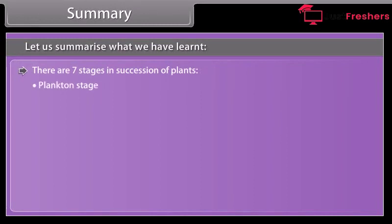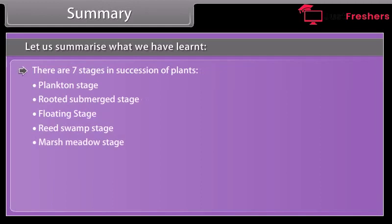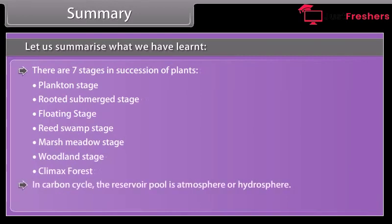There are seven stages in succession of plants: plankton stage, rooted submerged stage, floating stage, reed swamp stage, marsh meadow stage, woodland stage, and climax forest. In the carbon cycle, the reservoir pool is the atmosphere or hydrosphere. In the phosphorus cycle, the reservoir pool is the lithosphere.